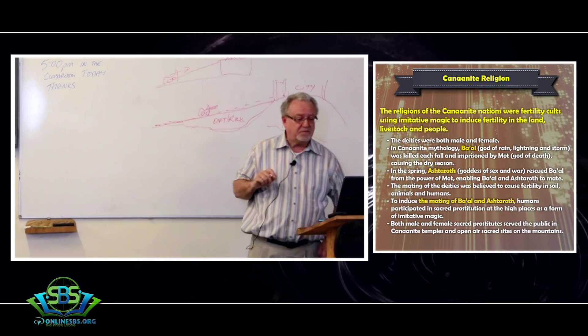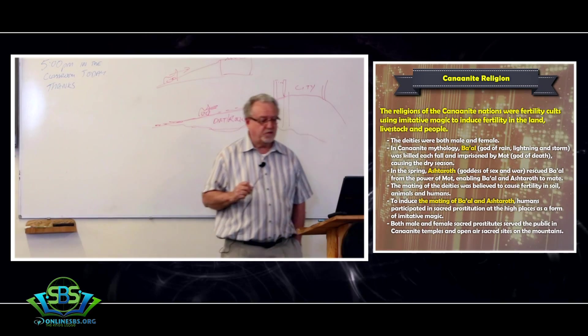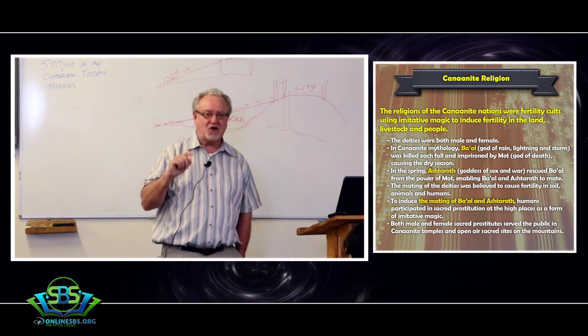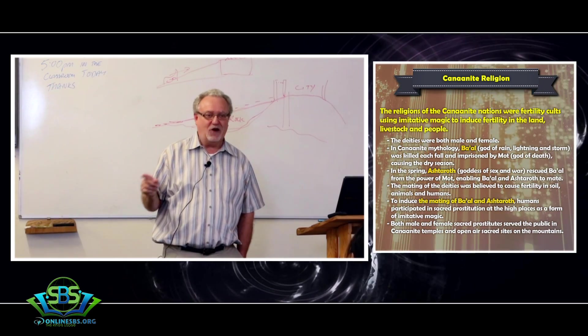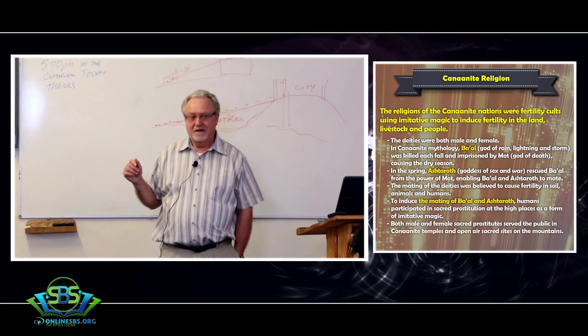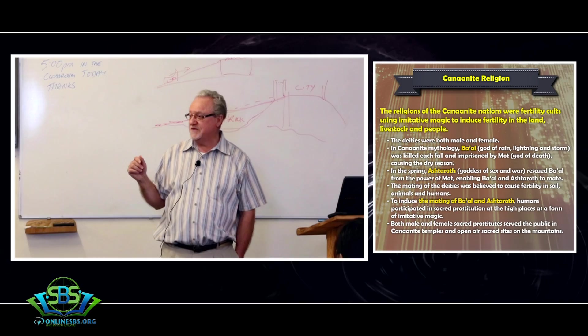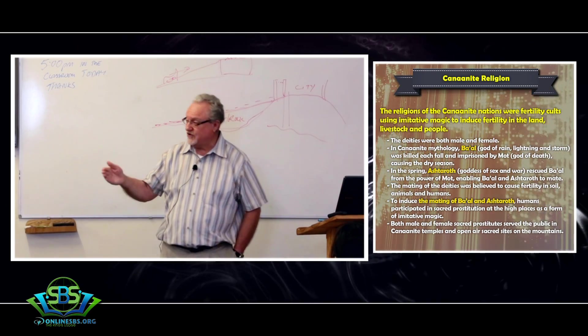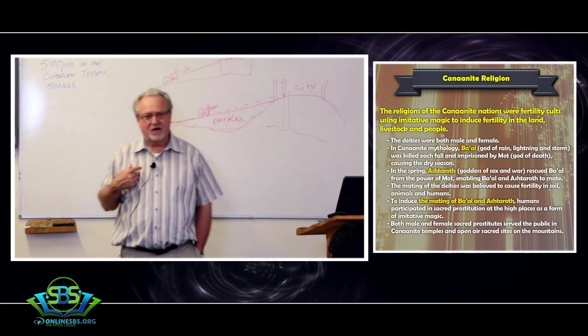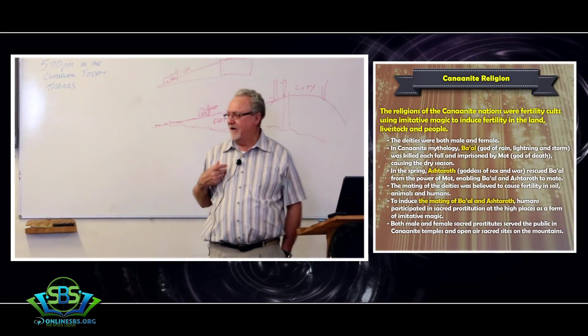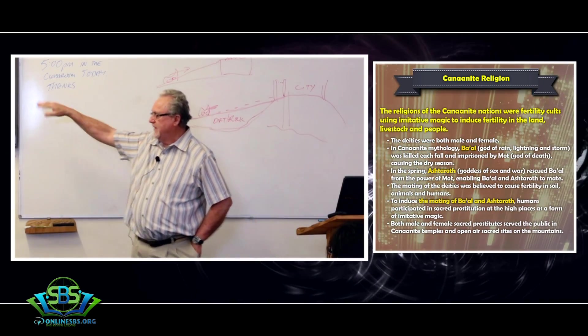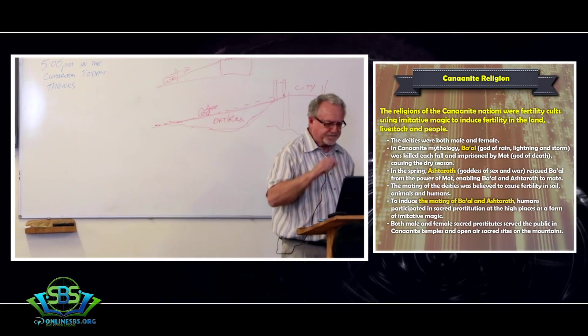Canaanite religion was essentially based upon mythology and imitative magic. Mythology was a way of thinking about how the gods behaved, and imitative magic was a way of doing things in the real physical world that would mimic what the gods and goddesses were doing in the unseen world. The idea behind Canaanite worship was to produce fertility because everybody needs to have water, they need to have milk, they need to have their sheep and goats multiply. The deities are both male and female. In the Canaanite mythology, Baal is the primary god, the god of rain, lightning, and storm. Once you understand that Baal is the god of rain, lightning, and storm, you understand why on top of Mount Carmel, Elijah says the god who answers by fire is really god. He was making a direct challenge to Baal, who is the god of lightning.